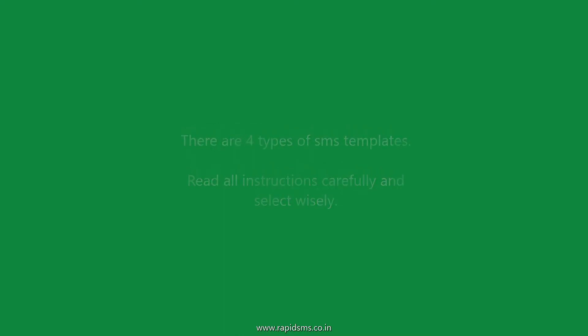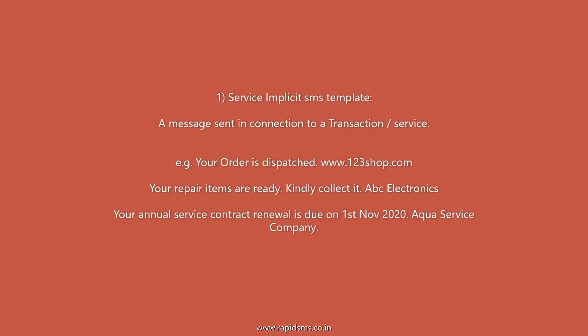First, Service Implicit Template. This type of template is used when you are sending SMS for an existing transaction. It can be an OTP SMS, Renewal Reminder, Payment Reminder, Dispatch Detail, etc. Basically it is a necessary SMS for an existing or new customer recipient.